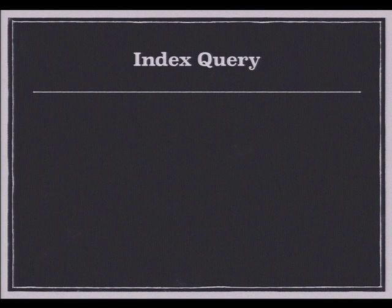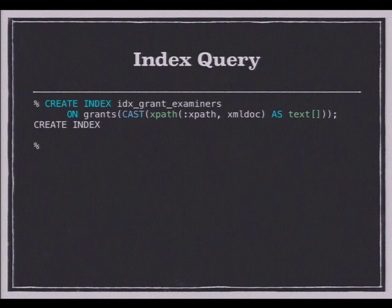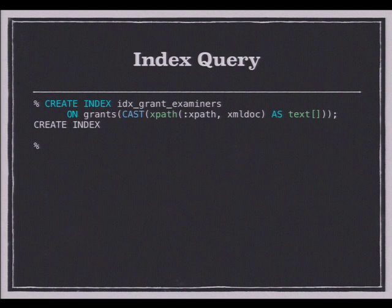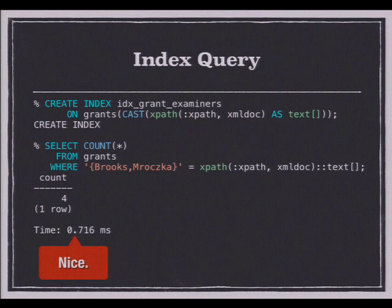So what we can do is index. I'm calling XPath on my XML doc — that gets an array of last names — and casting it to an array of text, because you can't index an array of XML. This allows us to create a GIN index on these array values for each row. When I run the query again, we're down to less than three-quarters of a second on my MacBook Air. That's a nice improvement.